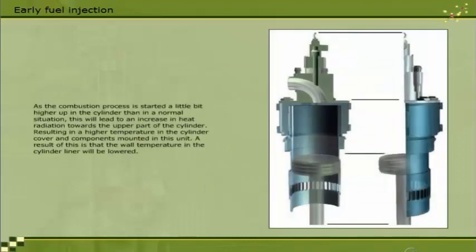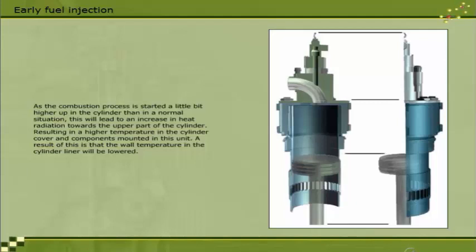As the combustion process is started a little bit higher up in the cylinder than in a normal situation, this will lead to an increase in heat radiation towards the upper part of the cylinder, resulting in a higher temperature in the cylinder cover and components mounted in this unit. A result of this is that the wall temperature in the cylinder liner will be lowered.